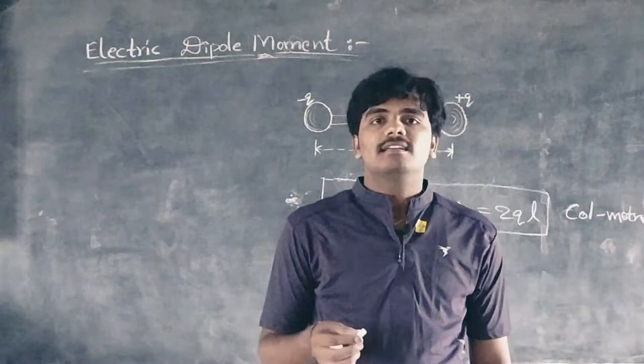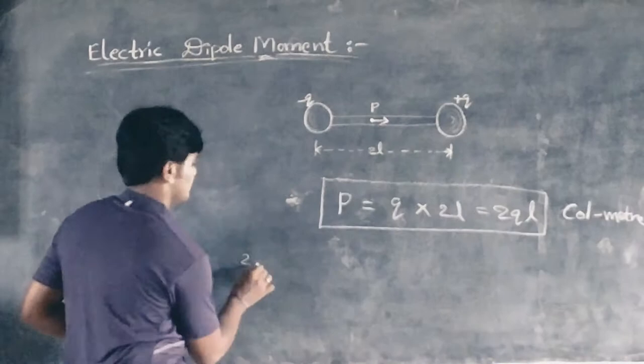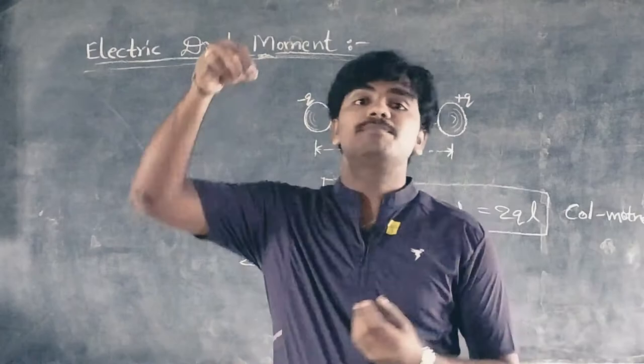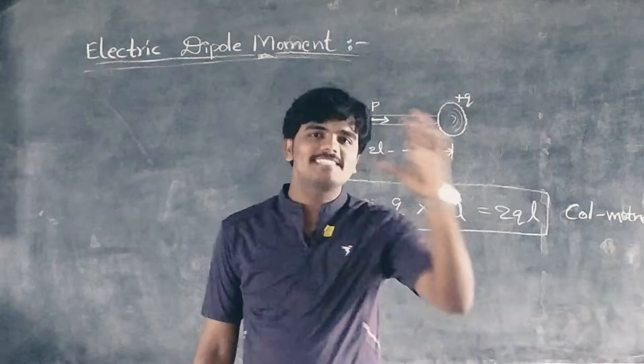It should be remembered that an atom consisting of positive and negative charges is not a dipole. The reason is that the center of positive charges and the center of negative charges coincide with each other, so 2L = 0. But when the atom is placed in an electric field, it becomes a dipole because the positive and negative centers are displaced relative to each other.